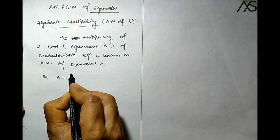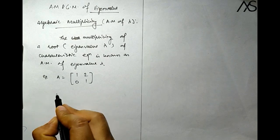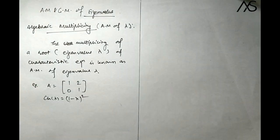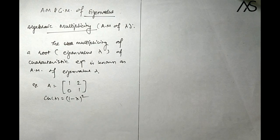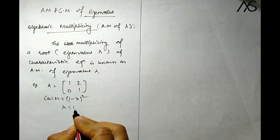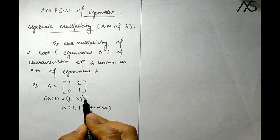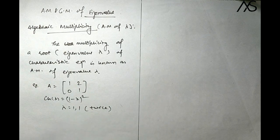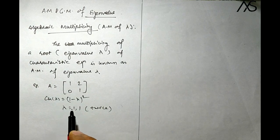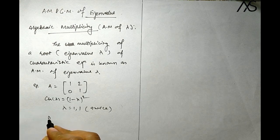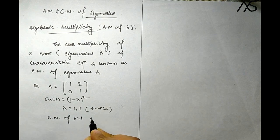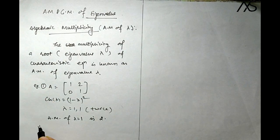For example, if we have a matrix, its characteristic equation can be written such that lambda equals 1 appears twice — that is, with power 2. So the algebraic multiplicity of lambda equals 1 is 2.